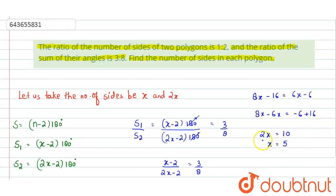So this is the value of x. Now the number of sides in the first polygon is 5 and in the second polygon we have assumed it as 2x, so 2x will be equal to 10. That means the number of sides in the polygons are 5 and 10.